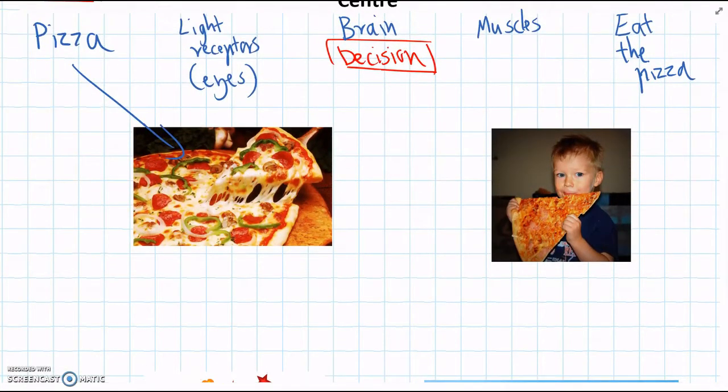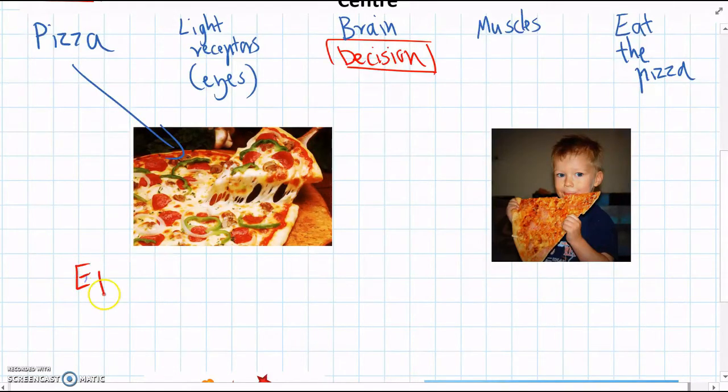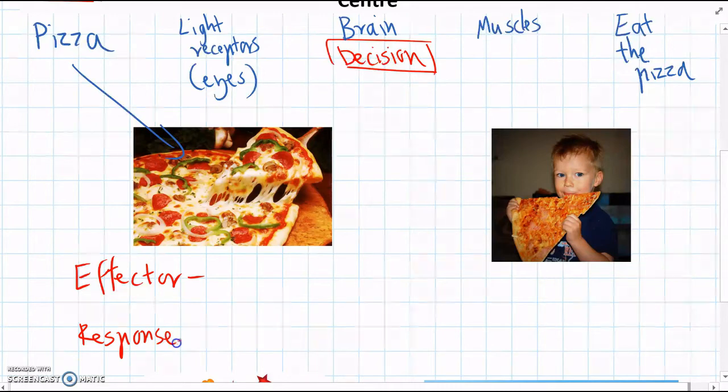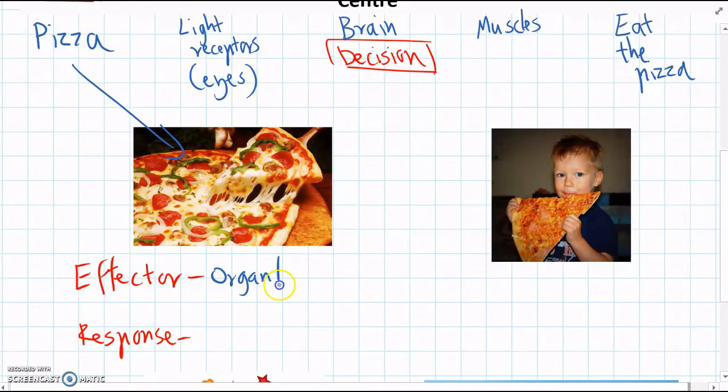So we've seen a couple of new words here. We have effector and we have response. Remember the effector is the organ, or the cells, sometimes it's just individual cells, that cause a response.